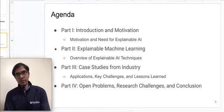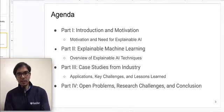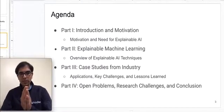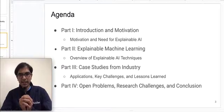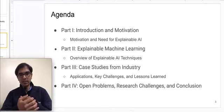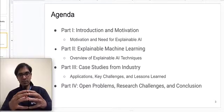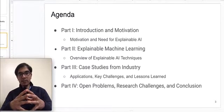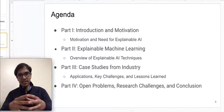The agenda of the tutorial is as follows. There are four parts. In the first part we'll be going over the introduction and motivation for why we need explainable AI. In the second part we'll be covering various techniques for explaining the foundations of explainable AI, including various techniques for explaining machine learning models, evaluation frameworks for those techniques, and so forth.